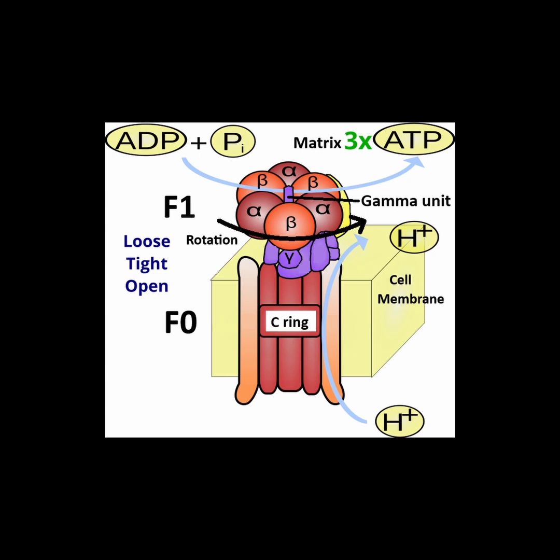Finally, in the open state, the ATP is released back into the matrix. This process is repeated in that exact order — loose, tight, open — for every turn of the gamma rotor to make three ATP molecules per full rotation.